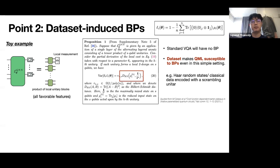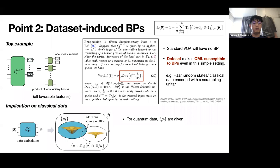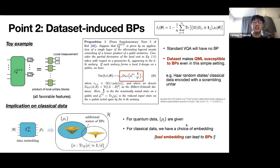The implication is mostly important when dealing with classical data. With quantum data, your state is given and you cannot change it much. But with classical data, you can play around with the embedding. So our advice is: choose your embedding carefully.